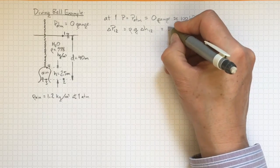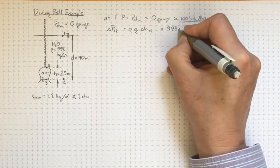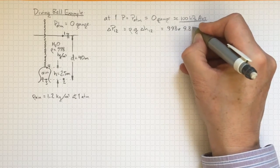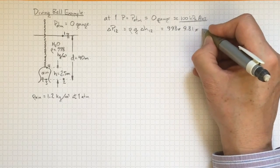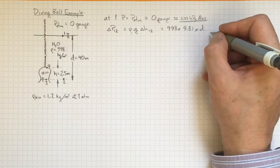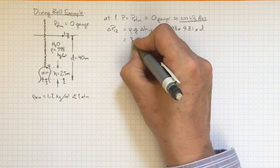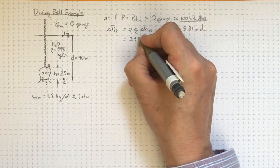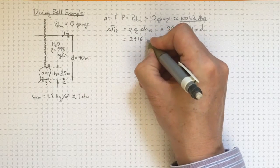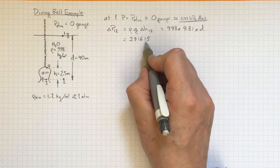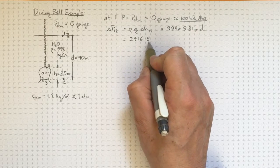That's going to be 998 times 9.81 for g times whatever our value of d is. And if d is 40 meters, then delta p 1 to 2 is going to be, plugging in some numbers, 391,615, a large number.